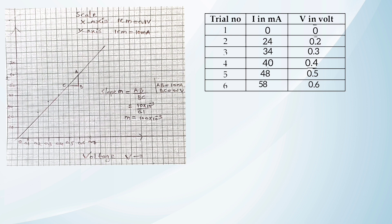After plotting the points, we observe that three points lie on a straight line. Joining any two points on the straight line and naming the triangle as ABC, we find the slope: m = AB/BC. AB equals 10 milliampere and CB equals 0.1 volt. Dividing 10 × 10⁻³ by 0.1, we get m = 100 × 10⁻³.